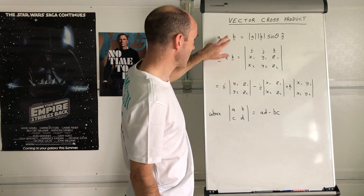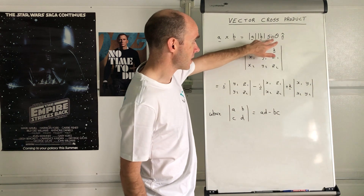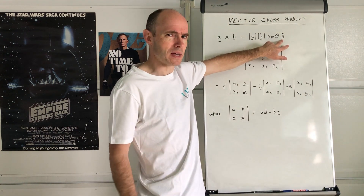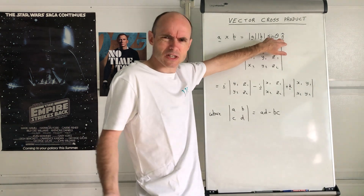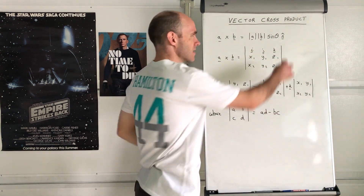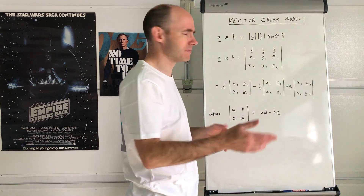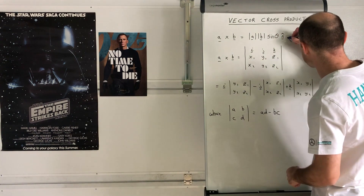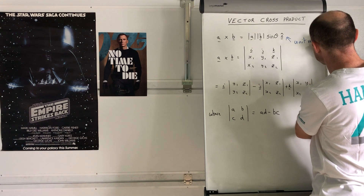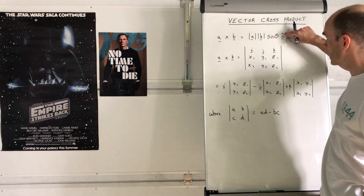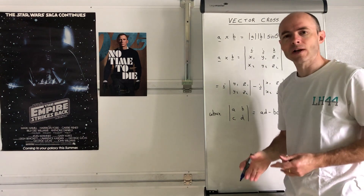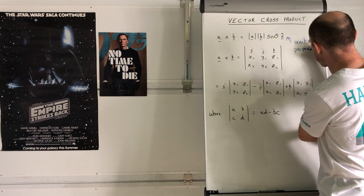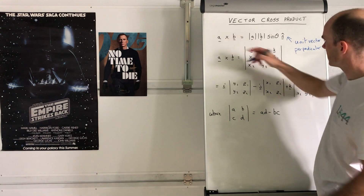The vector product A cross B is |A||B| times sine theta, instead of cosine theta, times this symbol here — n̂. It's a bit complicated to explain what that actually means. I read it as 'n hat' because it looks like it's got a hat on top of it. It stands for a unit vector — a unit vector is a vector of length one — and it is a unit vector that is perpendicular to both A and B.